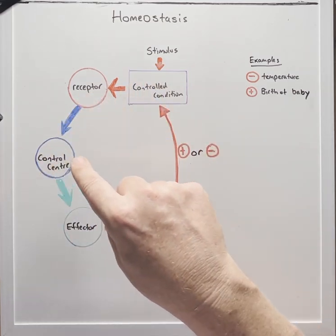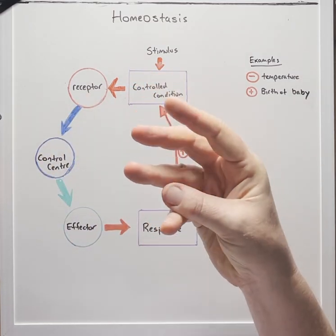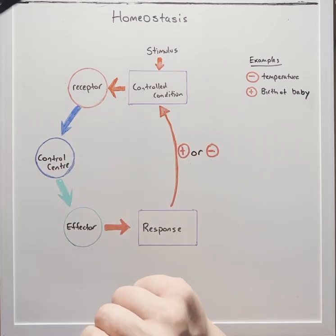This feedback loop is made up of three main components: the receptor, the control centre and the effector.